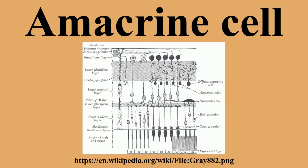Amacrine cells operate at the inner plexiform layer, the second synaptic retinal layer where bipolar cells and retinal ganglion cells form synapses. There are at least 33 different subtypes of amacrine cells based on dendrite morphology and stratification. Like horizontal cells, amacrine cells work laterally, but whereas horizontal cells are connected to the output of rod and cone cells, amacrine cells affect the output from bipolar cells and are often more specialized.